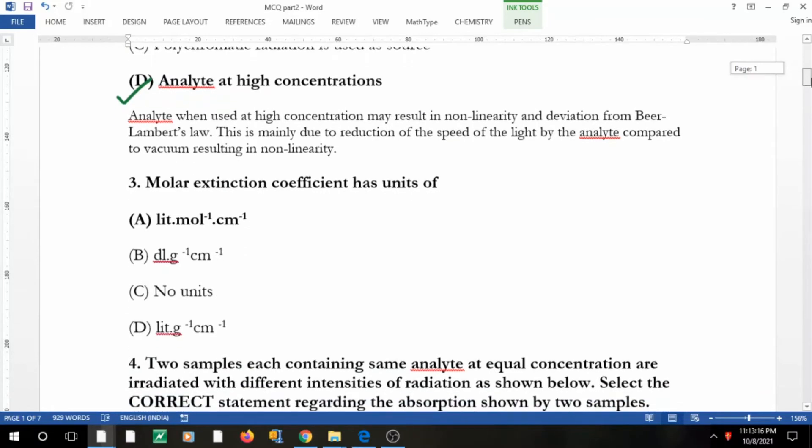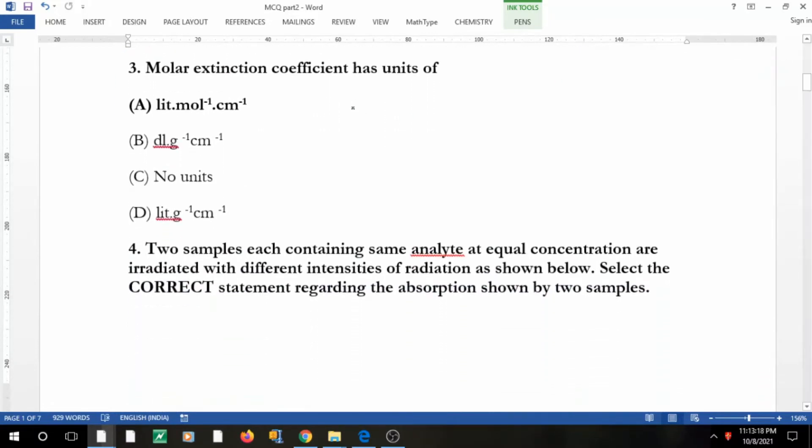Coming to the next: molar extinction coefficient has units of what? If you remember, A is equal to epsilon c l, which implies epsilon is equal to A by c l. A does not have any unit while c is mole per liter and l is path length which is centimeter.